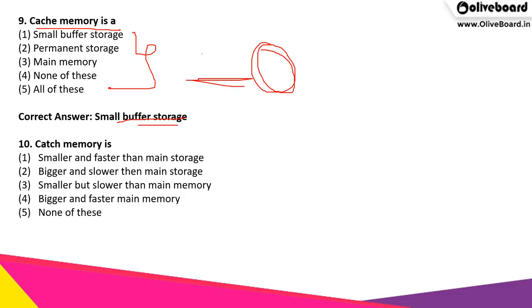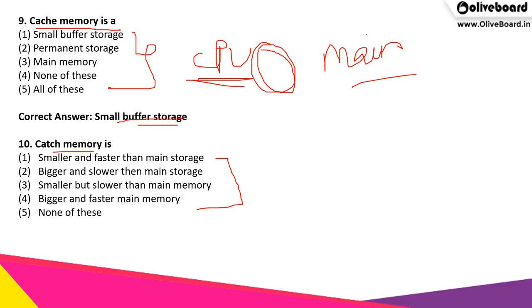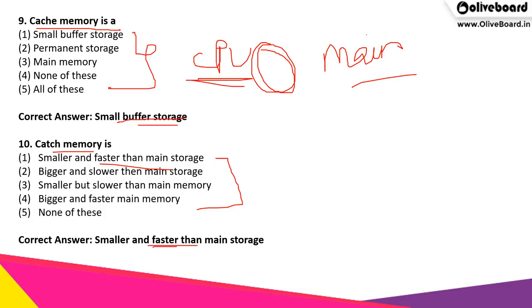Cache memory works between the CPU and the main memory of the computer. The next question: cache memory is what — is it smaller or bigger than the main memory, or is it slower or faster? The correct answer is it is smaller and faster than the main storage. Though it is small in nature, it is very fast to get data out of cache memory.